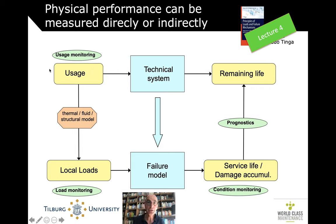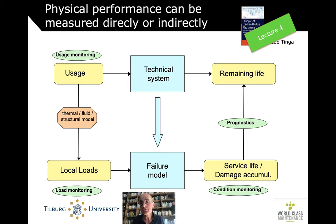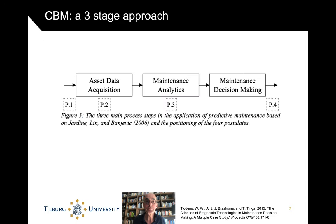Going from more indirect to more direct, the more direct you become, the more precisely you can see what's happening. But also the more difficult it becomes to calculate the data, whereas usage data is usually available because that's what the asset is used for outside the context of maintenance.